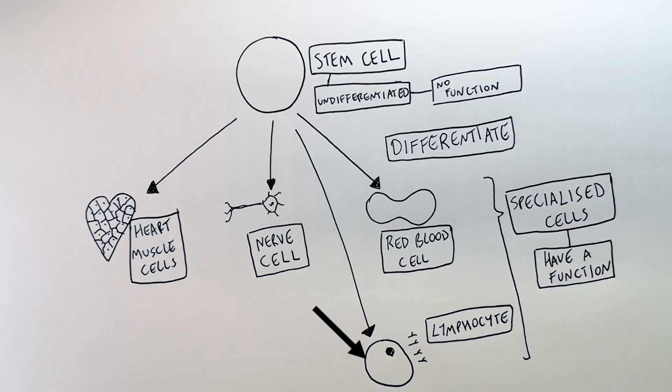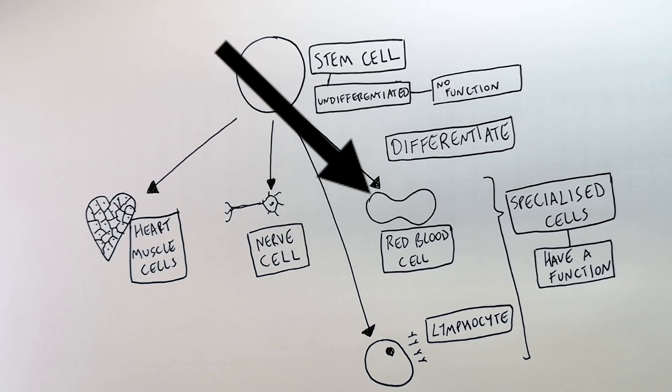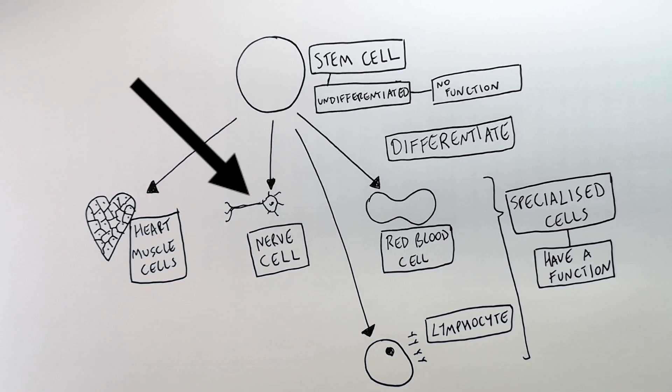Specialized cells have a function. Lymphocytes, for example, produce antibodies. Red blood cells carry oxygen. Nerve cells transmit electrical impulses. These cells all have functions.